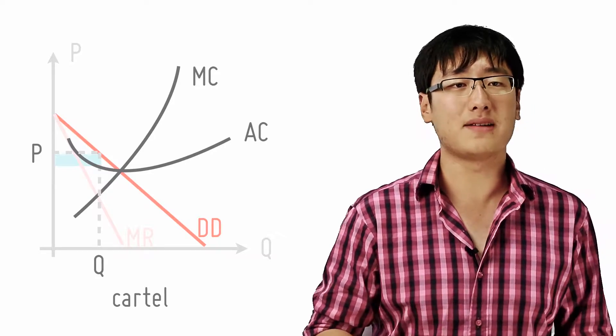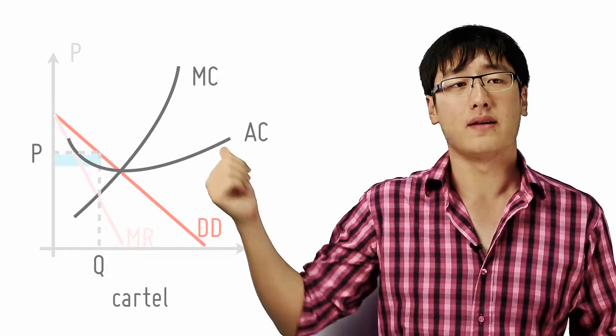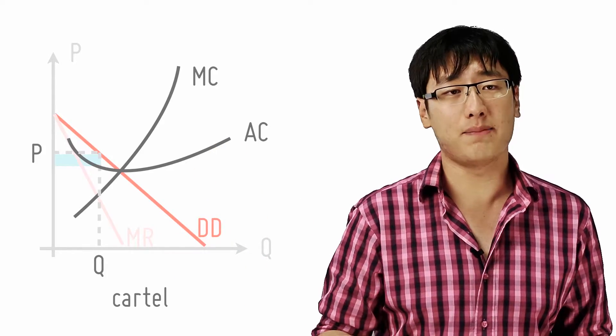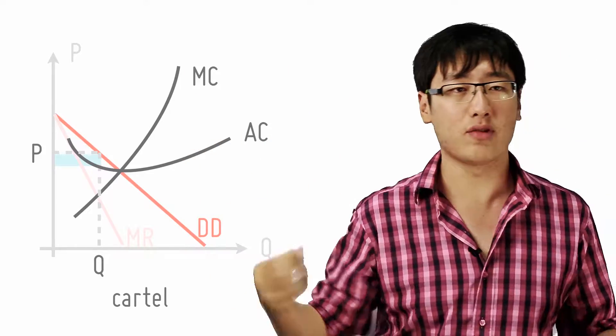Profits are maximized at Q, where MC equals MR. The cartel must therefore set a price at P, having agreed on the cartel price because it behaves like a monopoly as a whole, but individually they have to agree to this price.